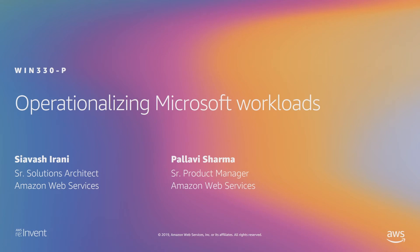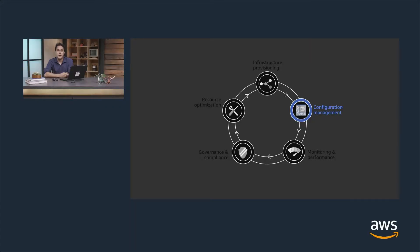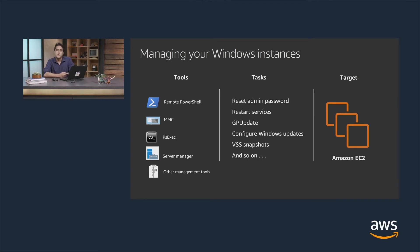Thank you, Pallavi. We talked about infrastructure provisioning. Now we're going to talk about configuration management. Most customers that migrate to AWS use tools they may already be familiar with — like remote PowerShell, MMC, Server Manager, or third-party tools — to do tasks like resetting admin passwords, restarting services, group policy updates, configuring Windows updates, or VSS snapshots. These tools work great on AWS, but customers wanted a more cloud-friendly solution, for which we built AWS Systems Manager.